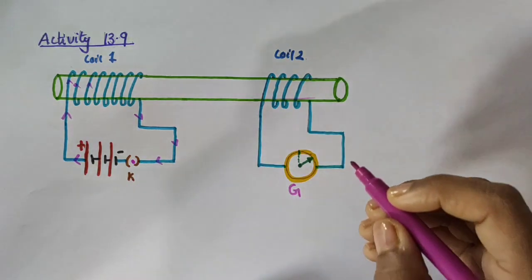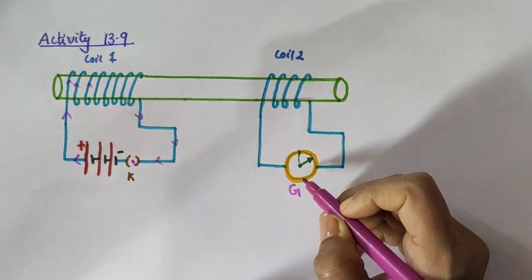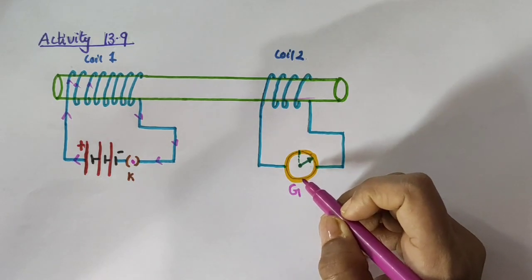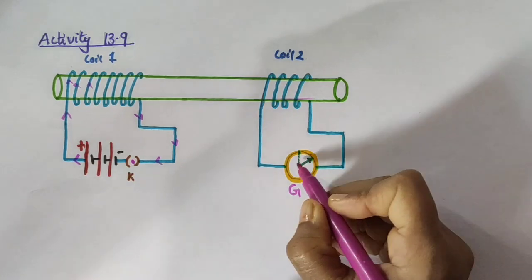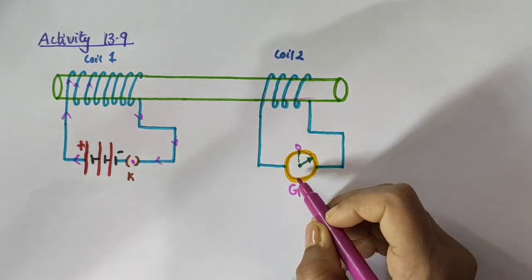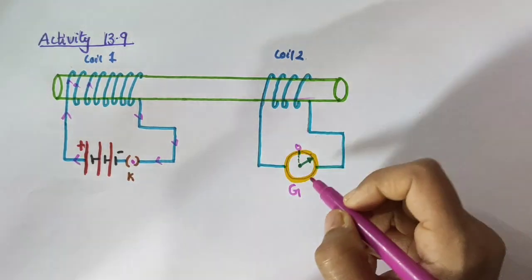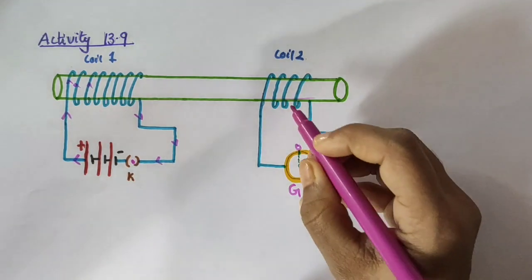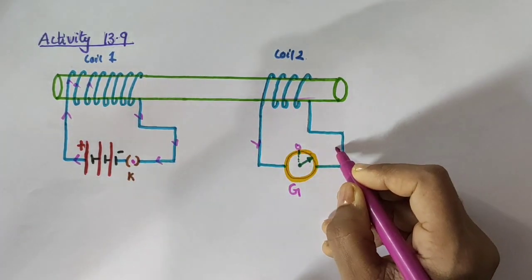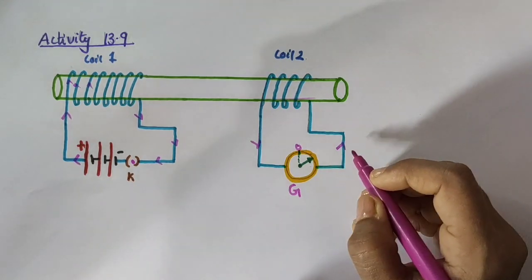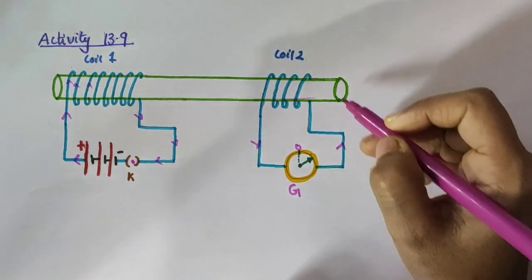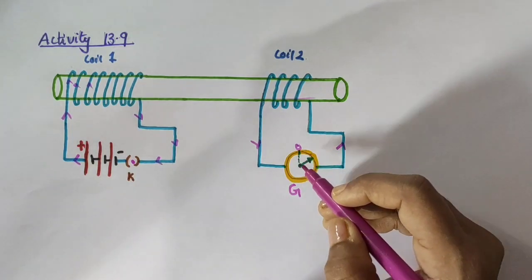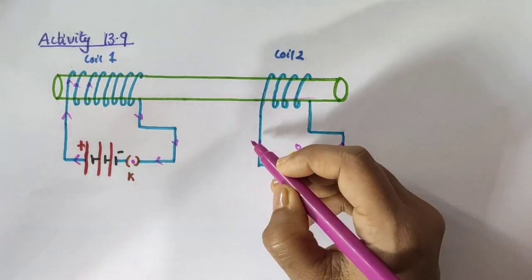The galvanometer connected to coil 2 shows a deflection in the needle for a moment — the needle deflects to the right, then very quickly returns back to zero. A momentary deflection indicates the presence of a momentary current in coil 2. Note that no battery or any other voltage source is connected to coil 2, but still there is a potential difference and hence a current induced in coil 2.